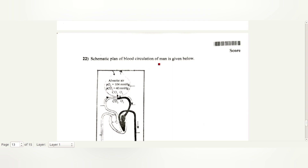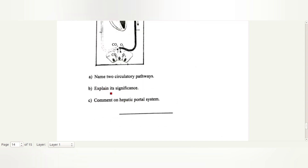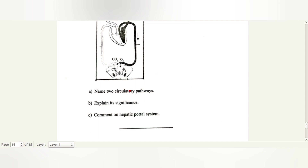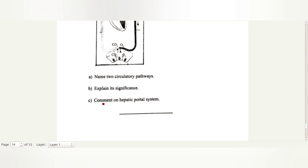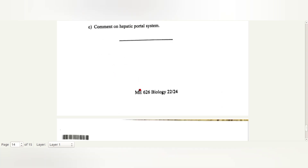A schematic plan of blood circulation in man is given. Name two circulatory pathways: pulmonary circulation and systemic circulation. Explain their significance: blood passes twice through the heart during one cycle, helping in the separation of oxygenated and deoxygenated blood. Comment on the hepatic portal system: it carries blood from the intestine to the liver.